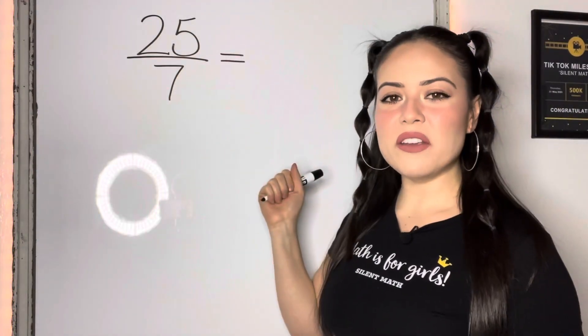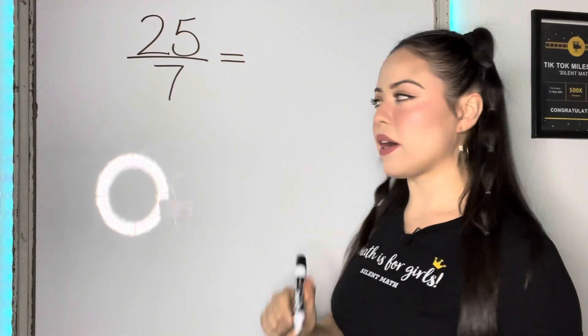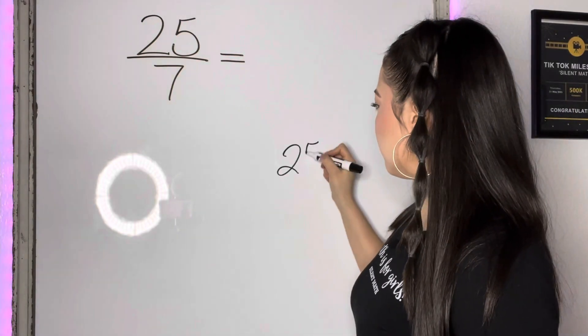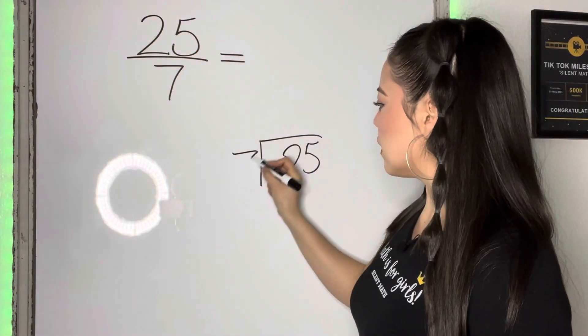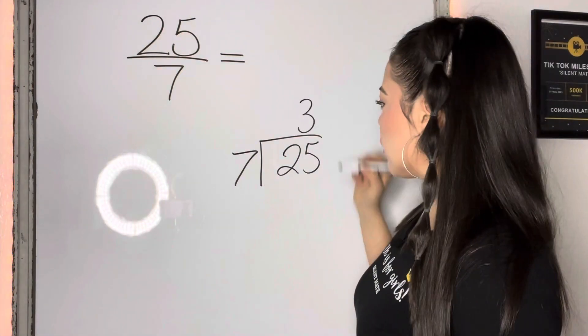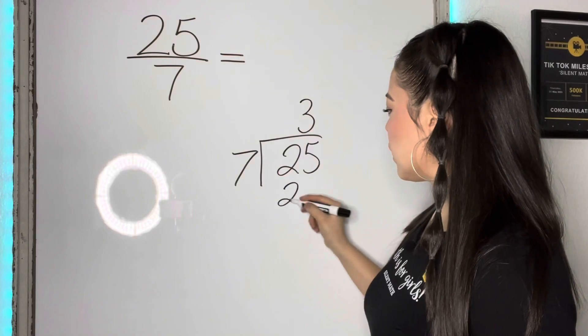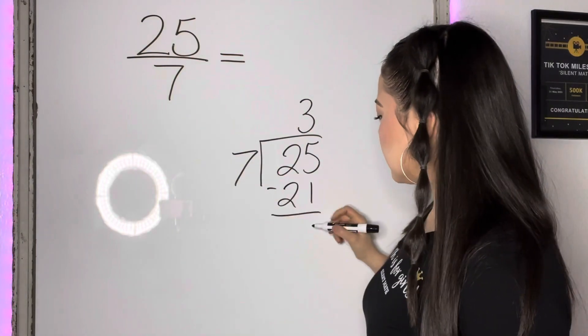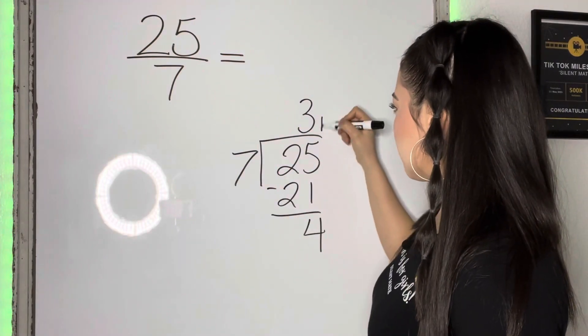Here is our example three, 25 sevenths. Again, let's divide. So 25 divided by seven. Seven goes into 25 three times without going over, three times seven is 21. There is a difference of four. So our remainder is four.